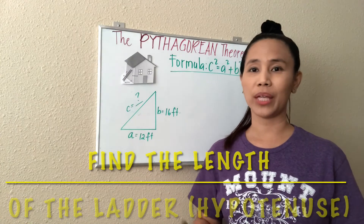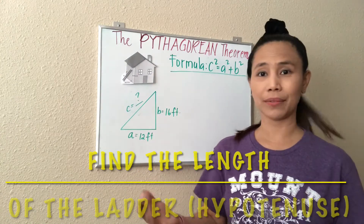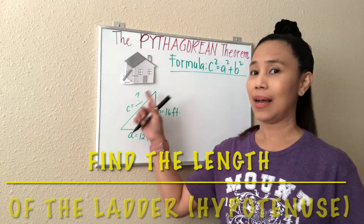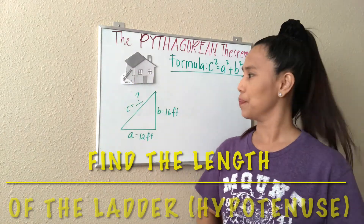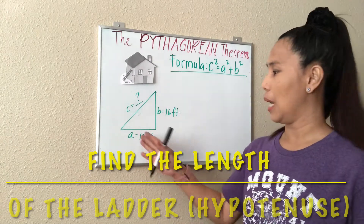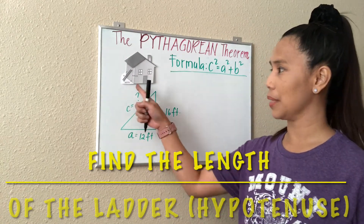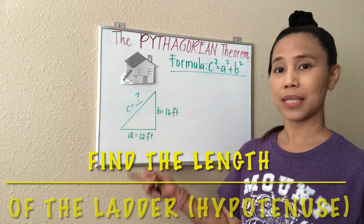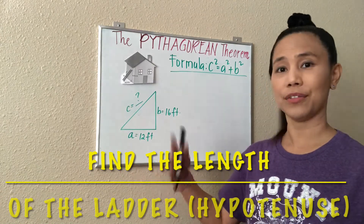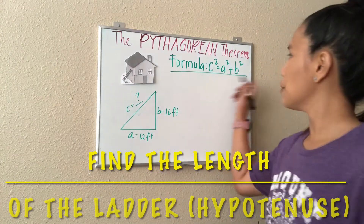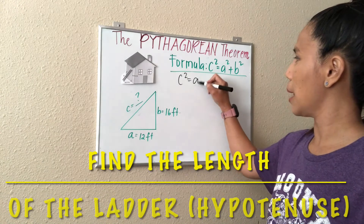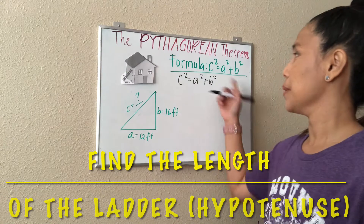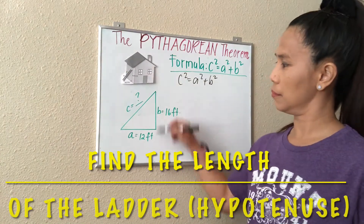Sometimes we wonder when we use this Pythagorean theorem in real life. One example is when we are getting the length of a ladder leaning on the wall of a house. Given are the values of A and B. A is equal to 12 feet and B is equal to 16 feet. The length of the ladder, which is represented by C, is unknown, so we have to find it. Using the formula C squared is equal to A squared plus B squared, we can now substitute the values for each of these sides.